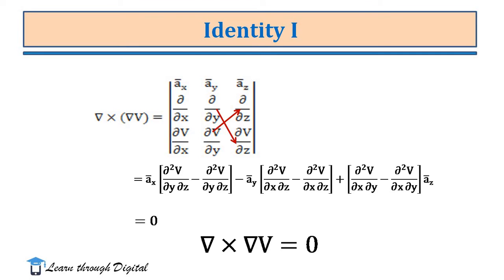Del cross del V is equal to 0. Note that in the Ax component, the first term dou²V/dou y dou z minus dou²V/dou y dou z are the same terms, so it is 0. Therefore, curl of the gradient of any scalar is equal to 0. This is the first identity.